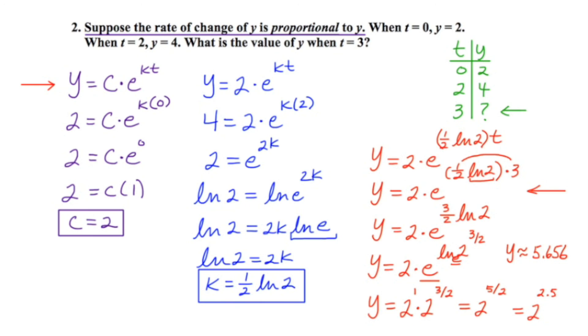So when t is zero, y is two. When t is two, y is four. And when t is three, y is 5.656. And this idea of having to first solve for c and then solve for k is going to be a very common theme in the rest of the problems.